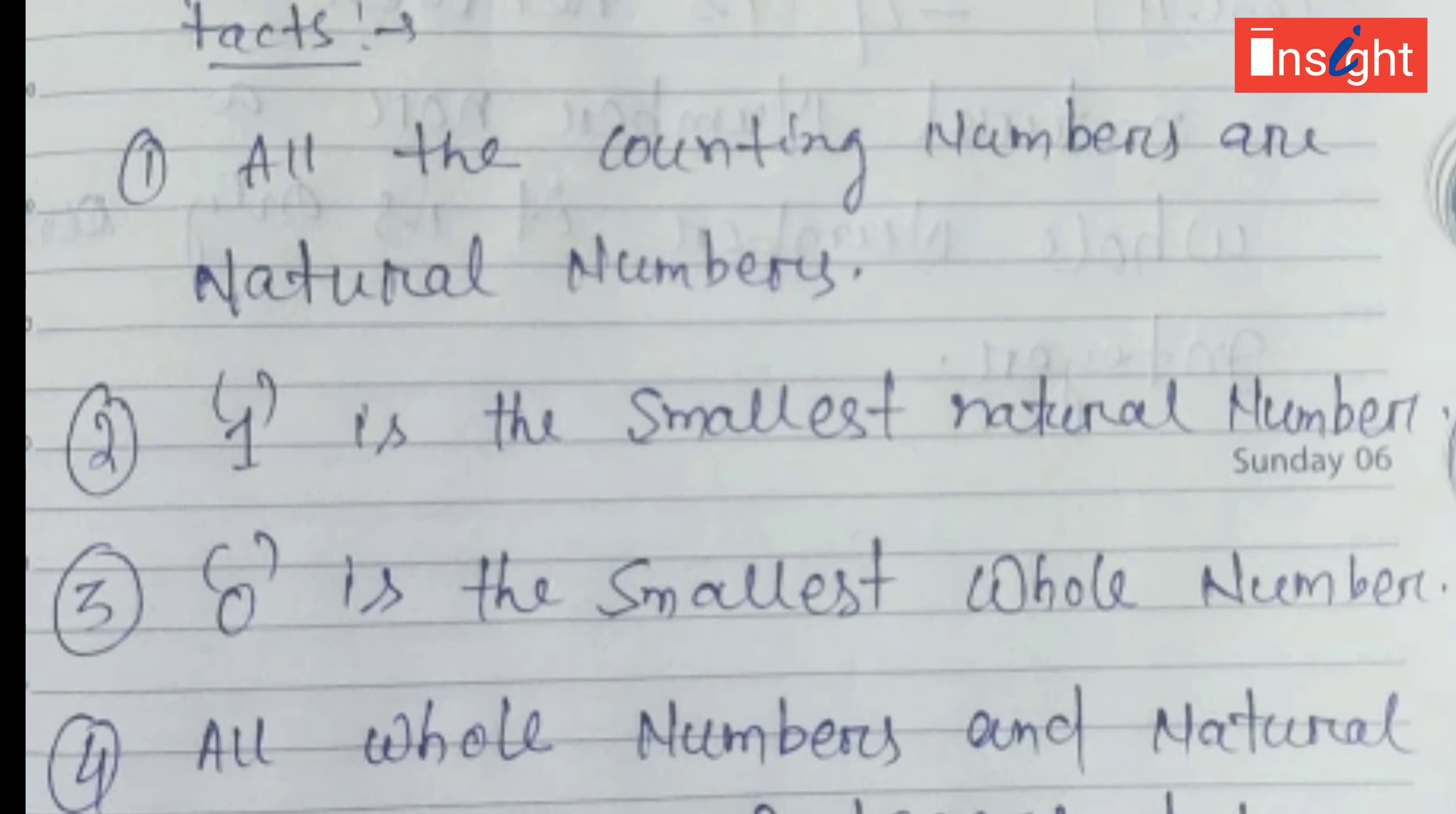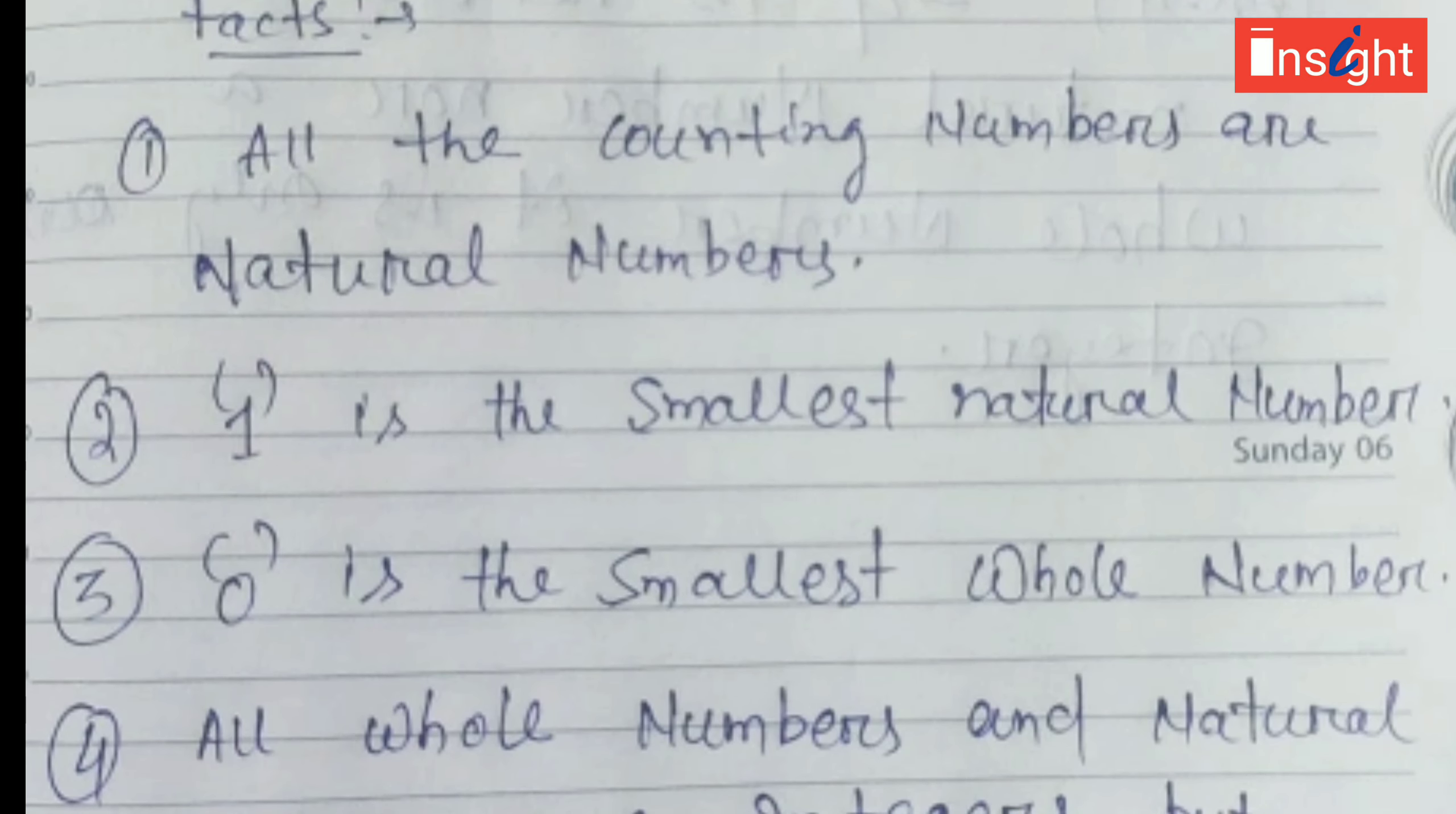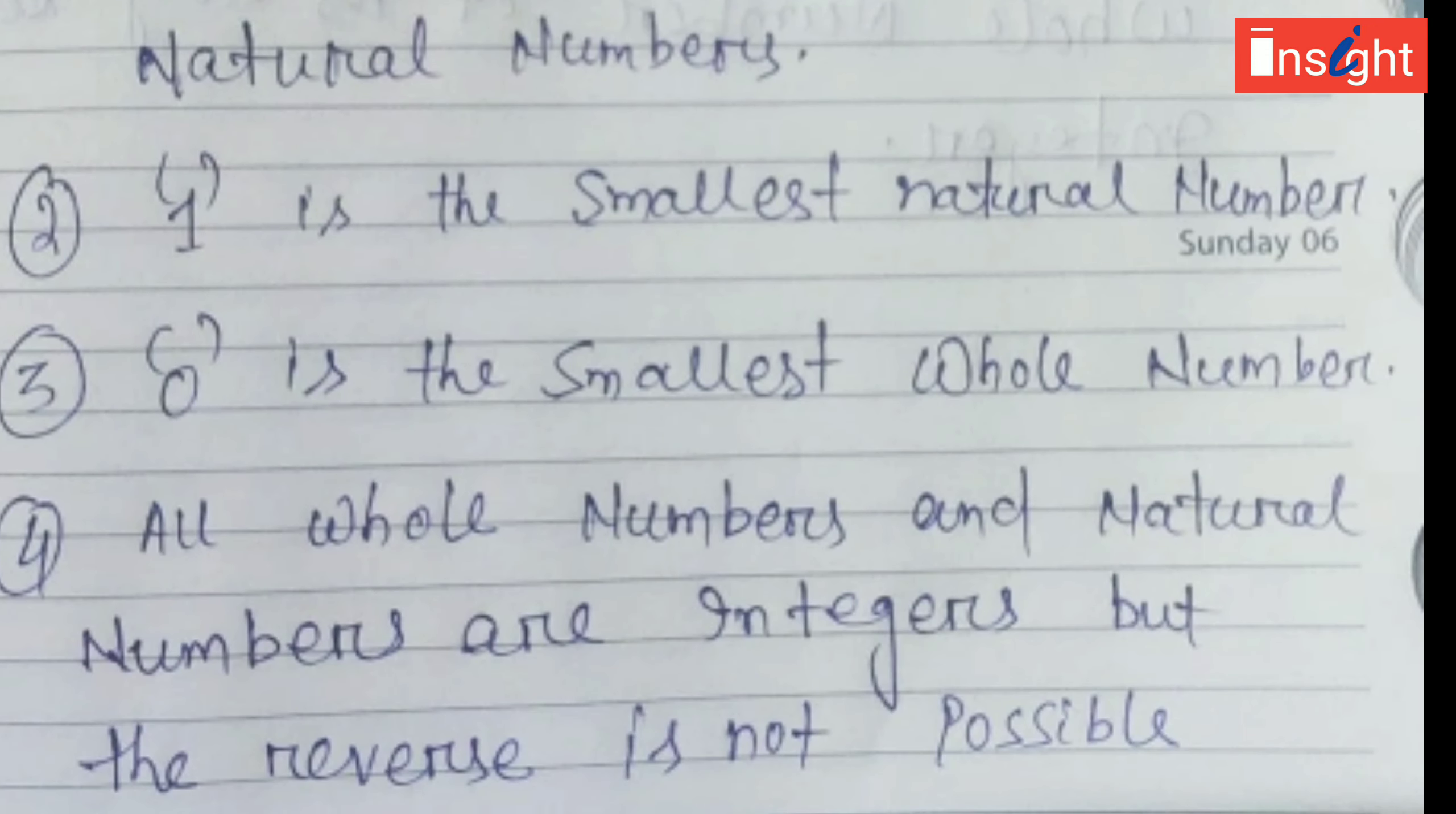All whole numbers and natural numbers are integers, but the reverse is not possible. Reverse means all integers are not whole numbers and natural numbers. For example, -4 is a negative integer which comes inside integers, but -4 is not a natural number and also not a whole number.